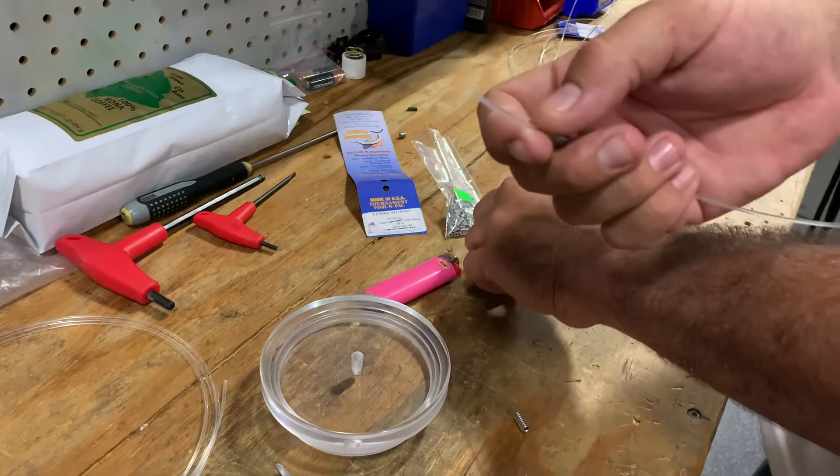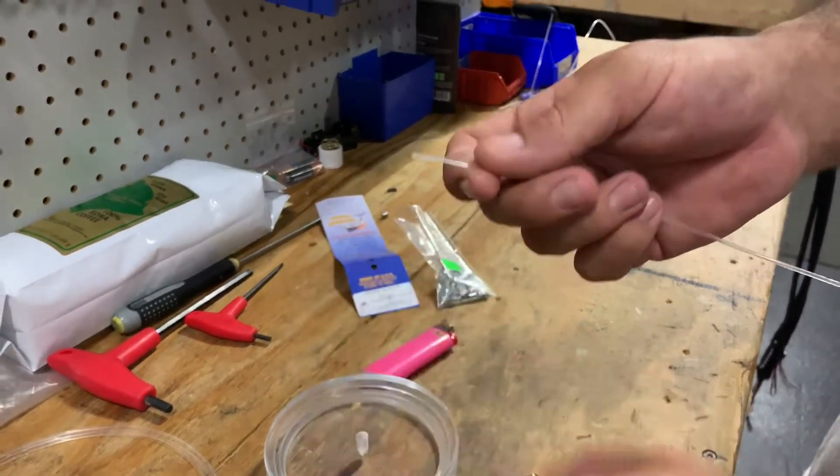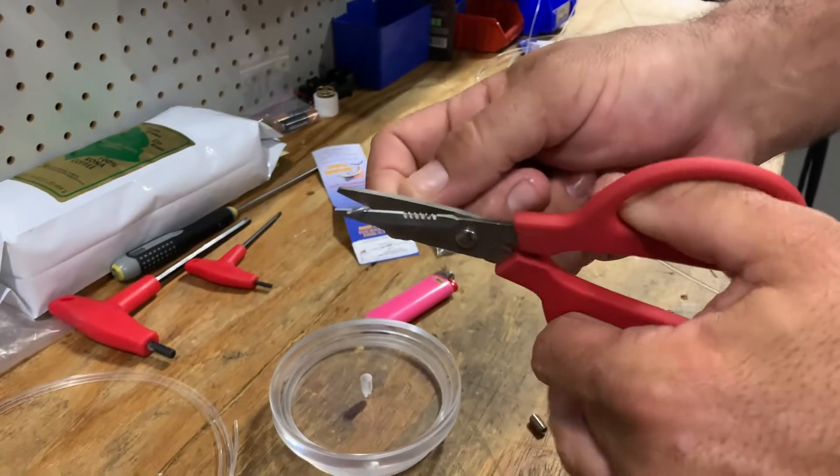Take your 100 to 150 pound crimp. Make sure you cut it at an angle to get a nice clean cut.